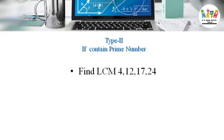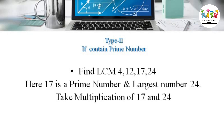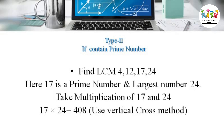Find the least common multiple of 12, 17, and 24. For 12 and 24, both values are in the same table, but the content contains one prime number, which is 17. So 17 is a prime number and the largest number is 24. The trick is to take the multiplication of 17 and 24 using the vertical cross method, so we get LCM equal to 408.